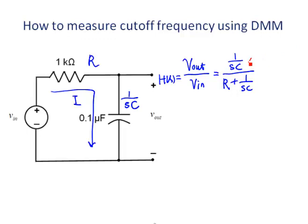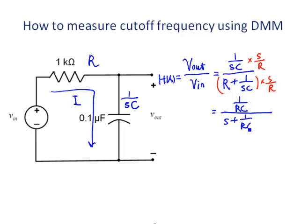The numerator and denominator are multiplied by S to get rid of the S in the denominator, and divided by R. So we get the numerator is 1 over RC, and the denominator is S plus 1 over RC. This circuit is a first-order low-pass filter, so the cutoff frequency should be the constant term in the denominator.